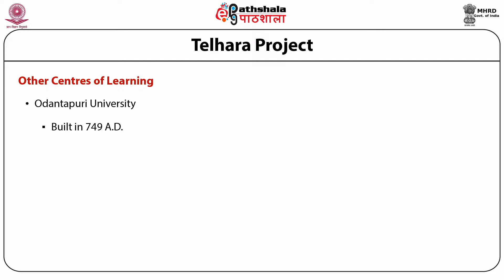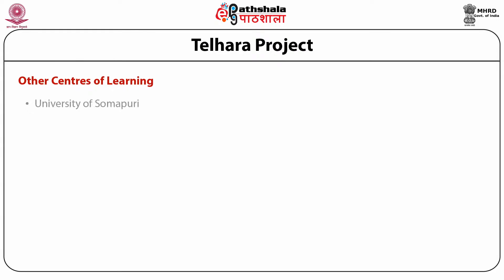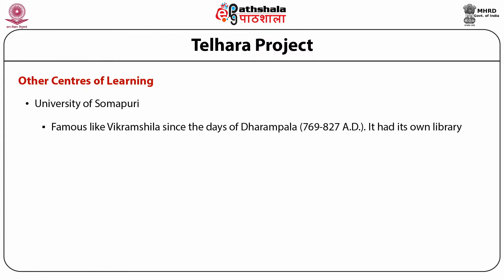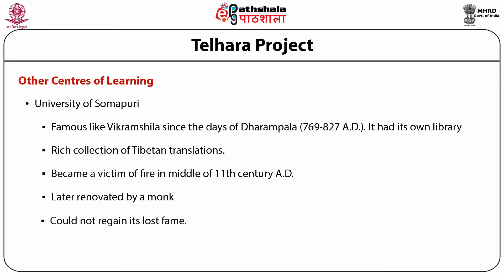Other centres of learning include Odantapura University, which was built in 749 AD. It is a model of the first Tibetan monastery, but unfortunately it too became a victim of Khilji's fury, and later Tarku of Gans raised a fortress on this site. The University of Somapuri, famous like Vikrameshila since the days of Dharampala from 769 to 827 AD, had its own library with a rich collection of Tibetan translations, but again became a victim of fire in the middle of the 11th century AD.